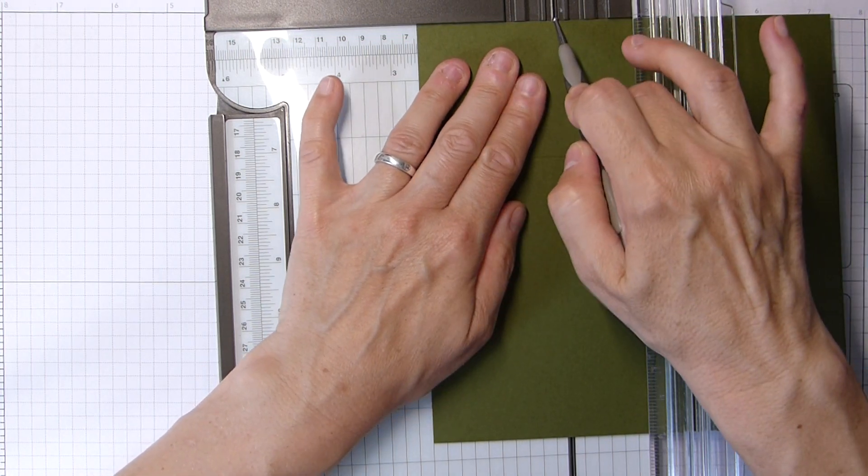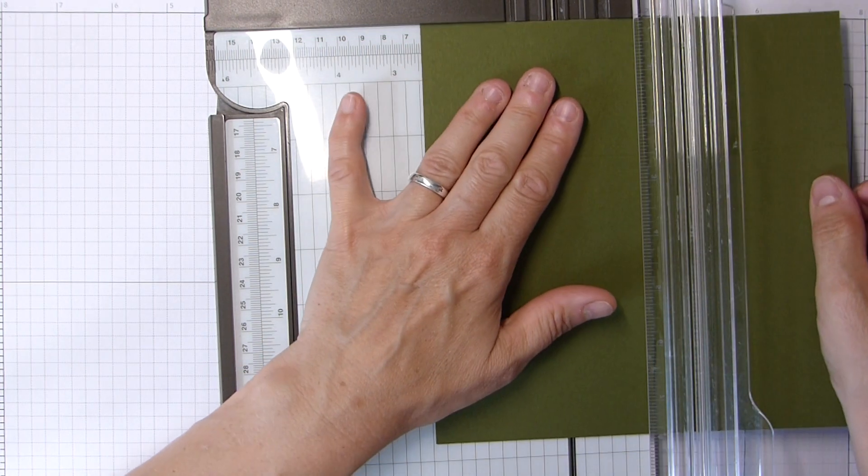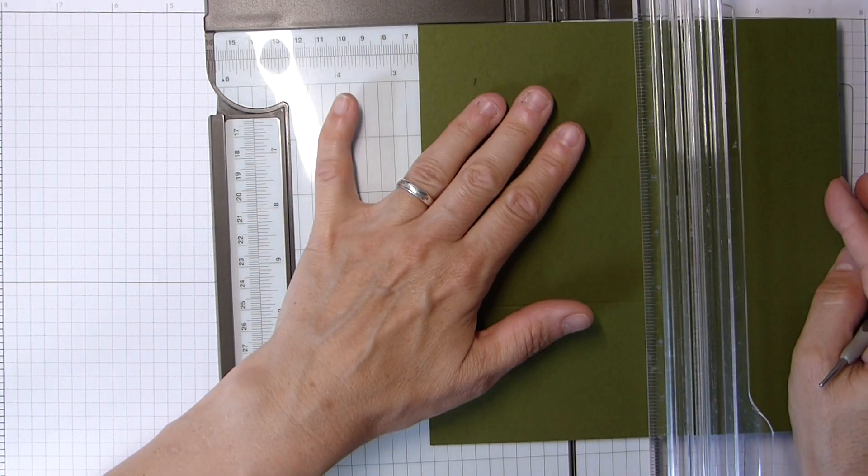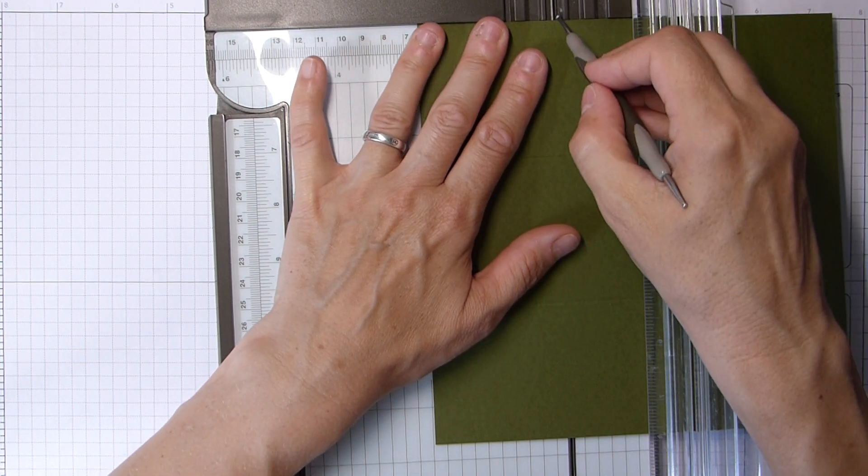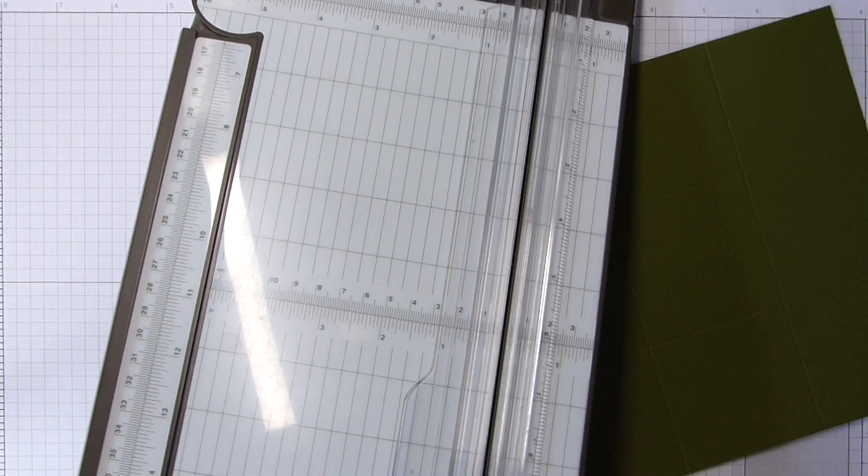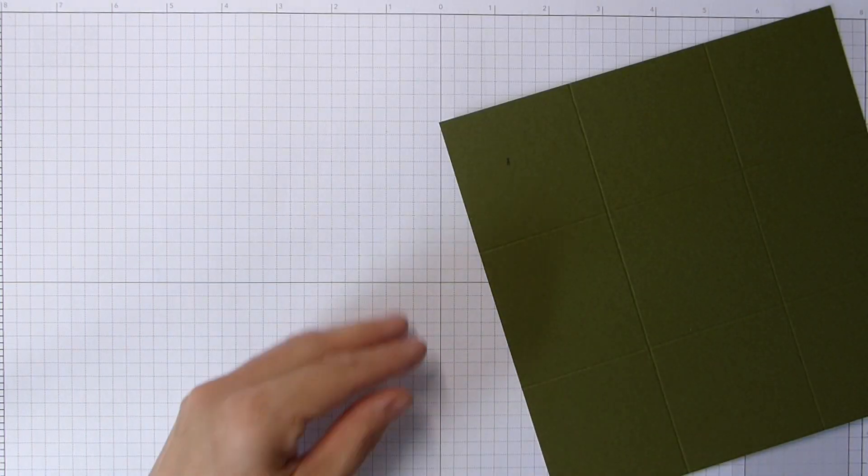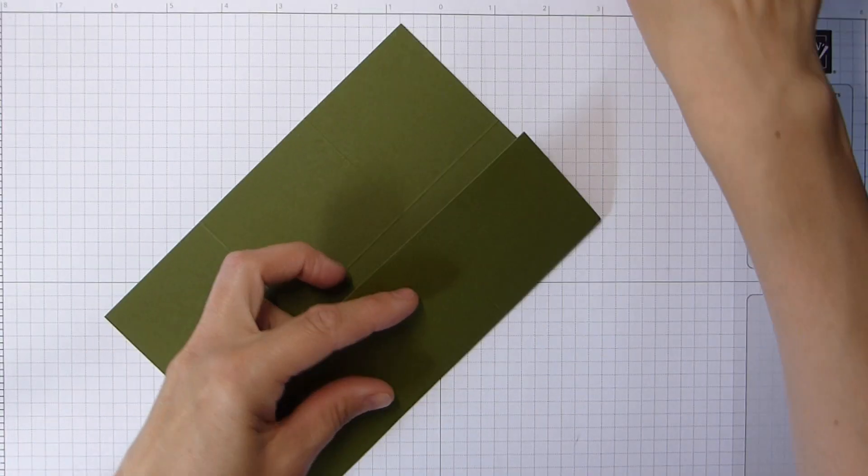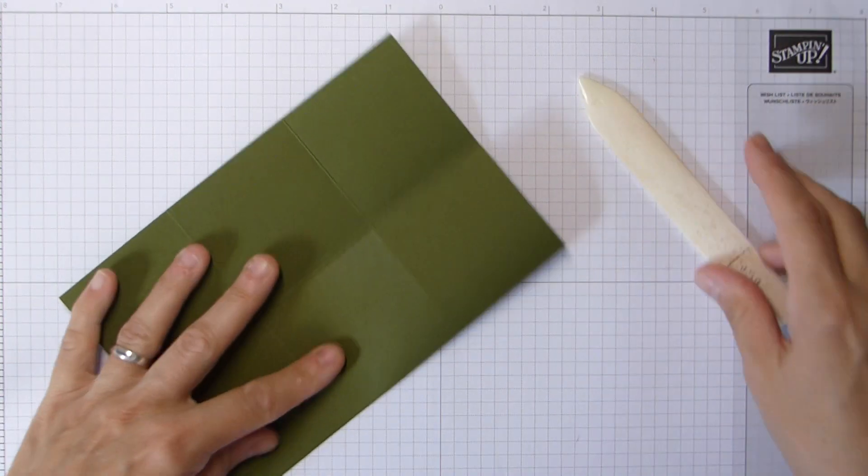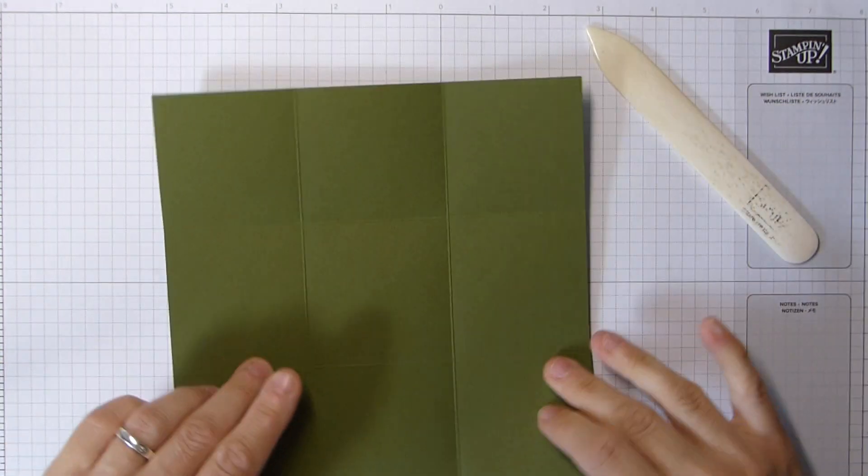Basic box, super simple, score your four sides and then cut your four corners. So that's that bit done. Fold and burnish. These don't have any DSP or anything on, so you don't have to mess too much with that.